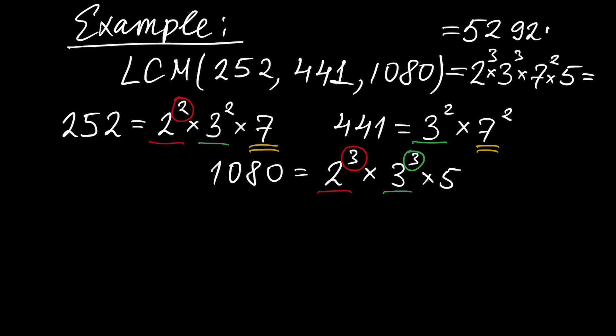This is the LCM of our numbers, and if we multiply and compute this number, it will be equal to 52920. So 52920 is the least common multiple. Each of our numbers — 252, 441, and 1080 — divides 52920, and 52920 is the smallest such number.